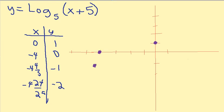x is negative four and twenty-four twenty-fifths over here. Down to negative two. About right here. Hopefully you can see where your asymptote is.